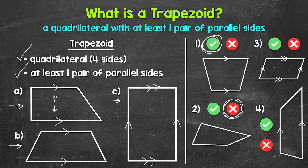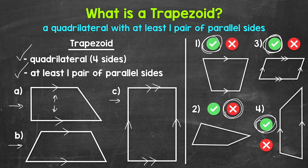Moving on to number three, we have a quadrilateral with two pairs of parallel sides. Do we have at least one pair of parallel sides? Yes, so this is a trapezoid. Although this is technically a trapezoid, a better and more specific name for this shape is parallelogram. Parallelograms have two pairs of parallel sides. And lastly, for number four, we have a quadrilateral with one pair of parallel sides, so yes, this is a trapezoid.